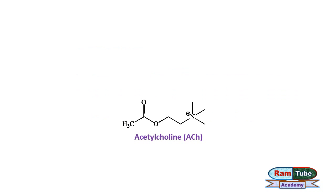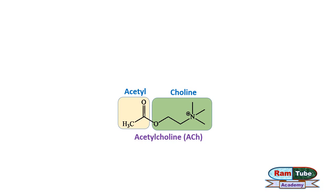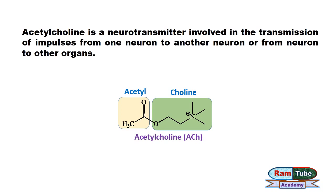This is the structure of acetylcholine, abbreviated as ACh. The left group of the molecule is acetyl while the right group is choline, hence the name acetylcholine.